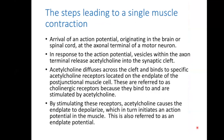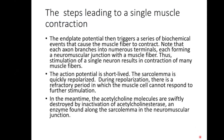The steps leading to a single muscle contraction: first, an action potential arrives from the brain or spinal cord to the motor neuron terminal. In response, vesicles release acetylcholine into the synaptic cleft. Acetylcholine diffuses across the cleft and binds to receptors on the end-plate of the post-junctional muscle cell. The receptor stimulation causes end-plate depolarization, sodium enters, and muscle fiber contracts.